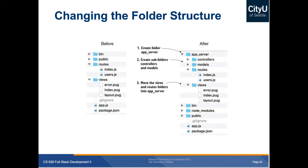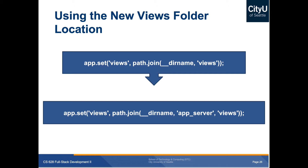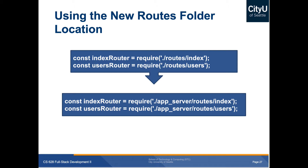To change the folder structure for MVC, create an app server folder and place all application server files there, with subfolders for controllers, models, and views. You'll also need to update the views folder location in your code using app.set — think of it like variable assignment. When you say app.set('views'), you're setting the views variable to path.join combined with __dirname and the views folder path, pointing to the correct location in your project.